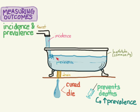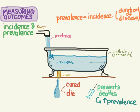One way to think about this is that prevalence is equal to the incidence times however long water stays in the tub. How long water stays in the tub represents how long people have the disease, and the way they get rid of disease is either by being cured or dying. So prevalence equals the incidence times the duration of disease. This hopefully showed you the relationship between incidence and prevalence using our bathtub model as well as this equation.